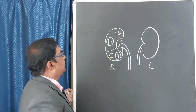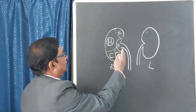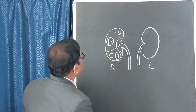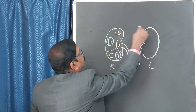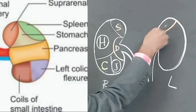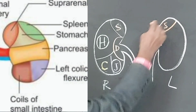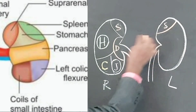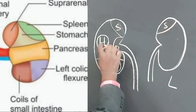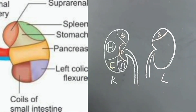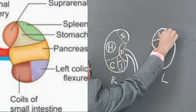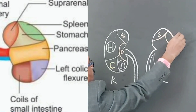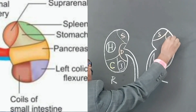Let us see the relations of the left kidney — obviously the anterior surface. Here also you will get the impression of the suprarenal gland on the left side. And in the case where the right kidney had a hepatic impression, here on the left you will get the spleen impression, which is close to the lateral border. This is the splenic impression.